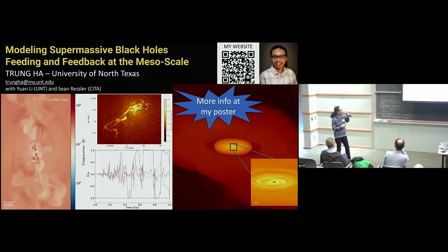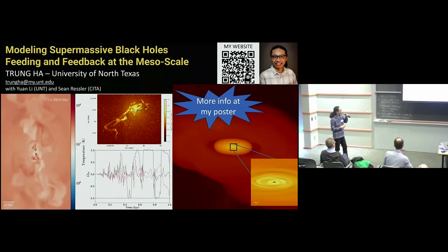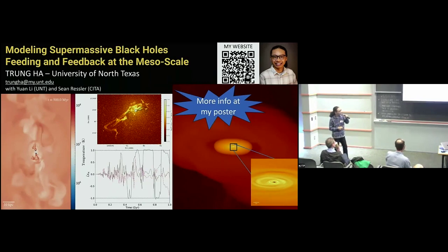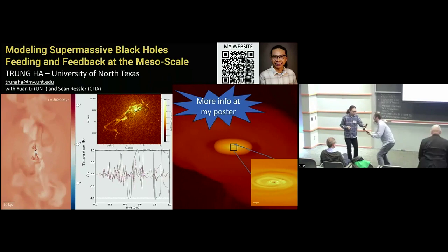We're trying to study the accretion flows from the galaxy scale down to the meso scale. We use simulations in Athena++ and have a bipolar jet which drives turbulence and mixing at the galaxy scale. This creates cold gas which cascades down within the Bondi radius, consistent with observations. This is the mesoscale simulation achieved by zooming into the center of the galaxy — within 10 parsecs of the galactic center. Please come to my poster for methodology and preliminary results.